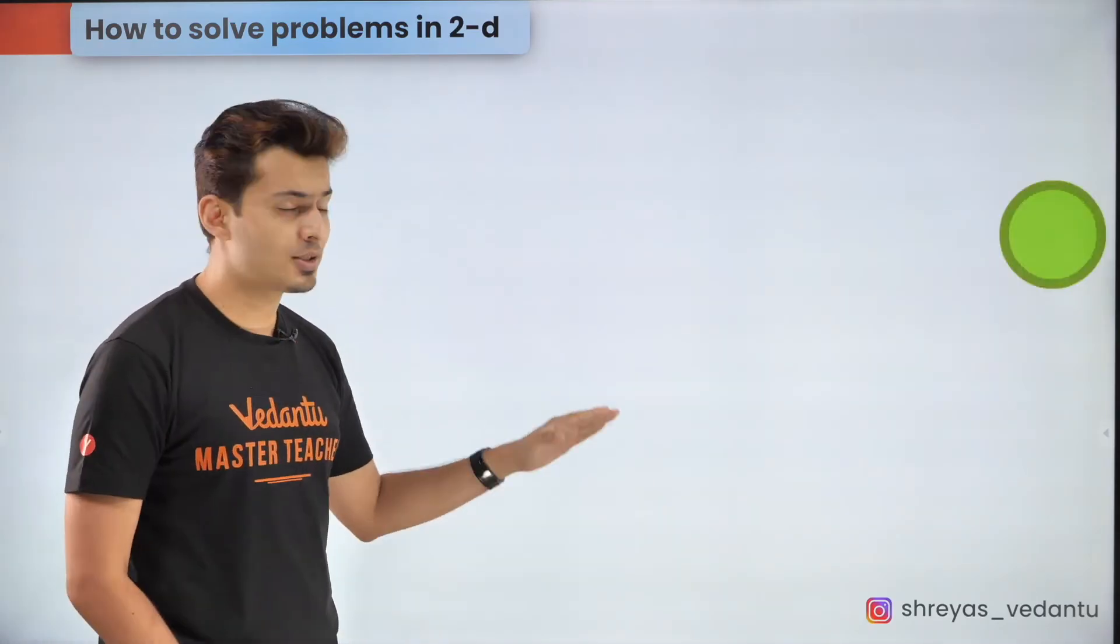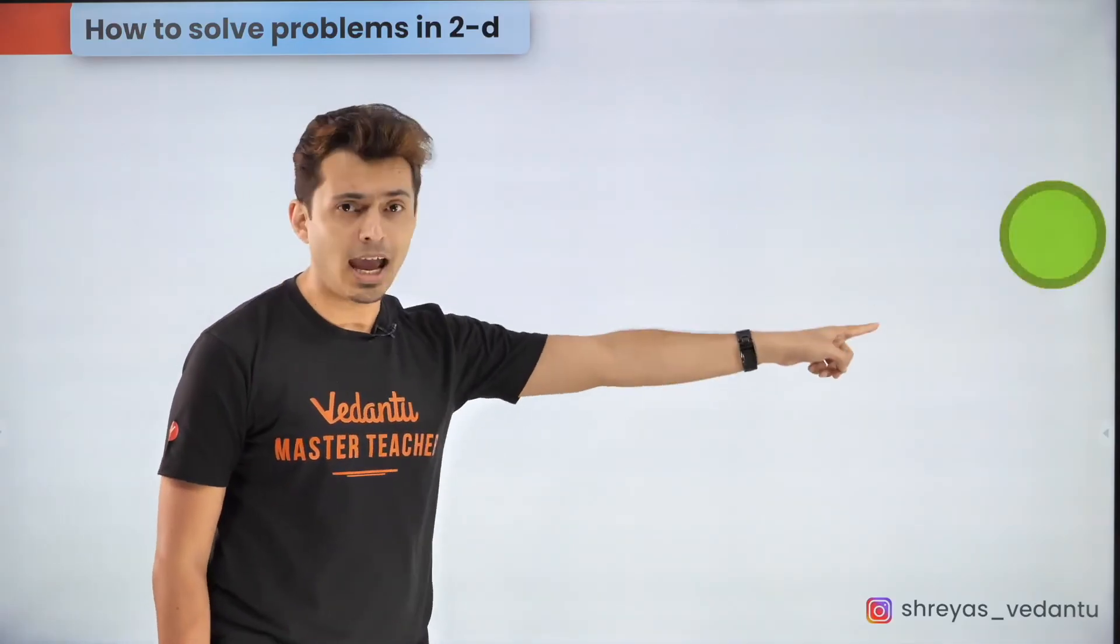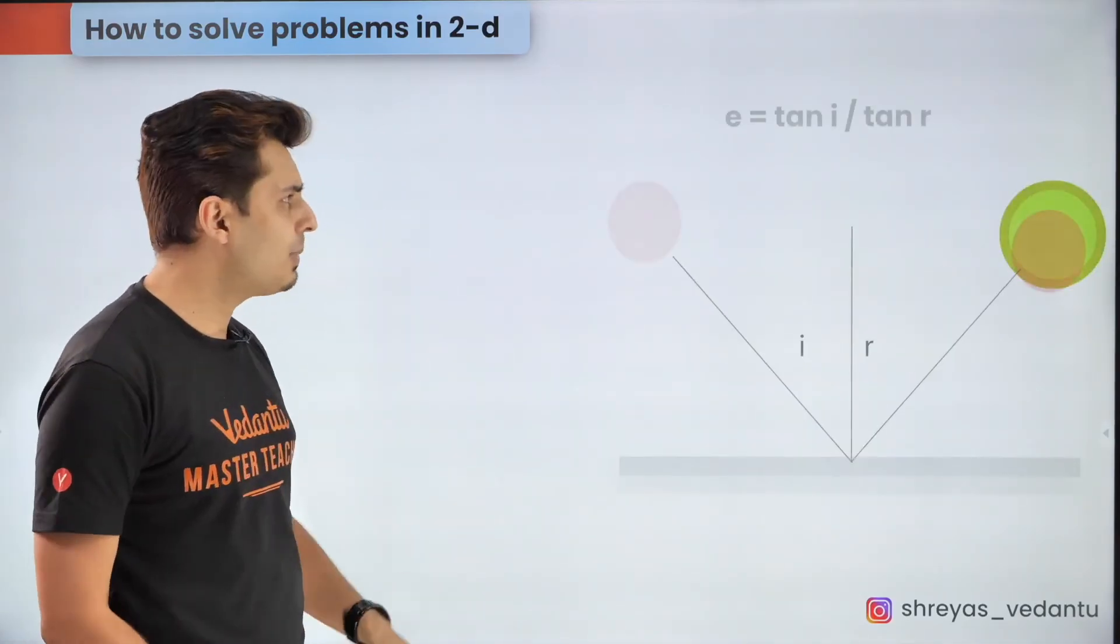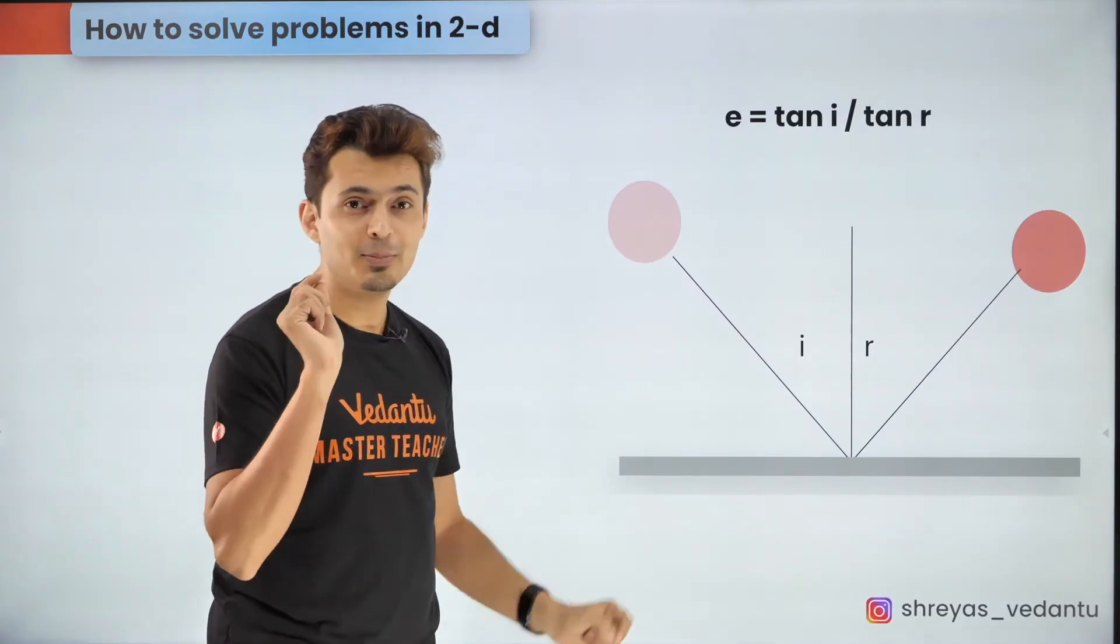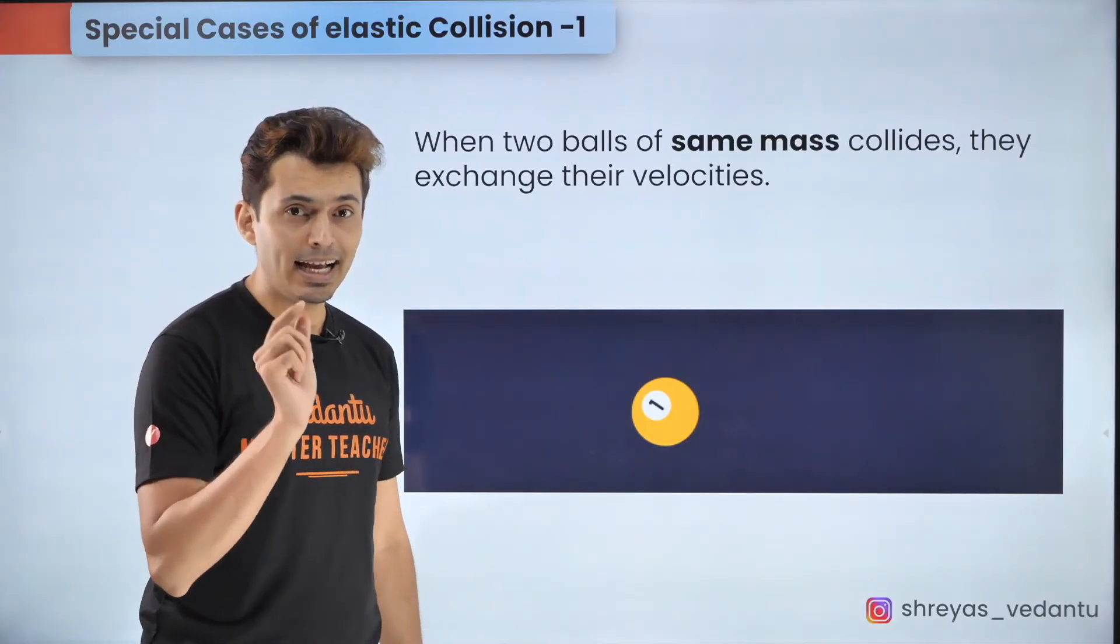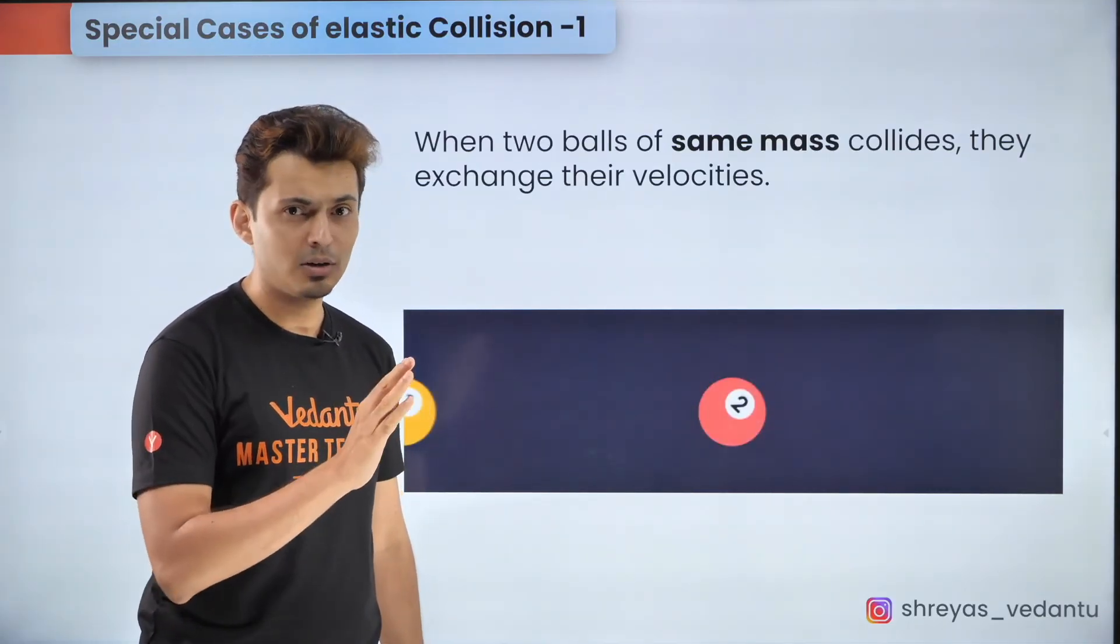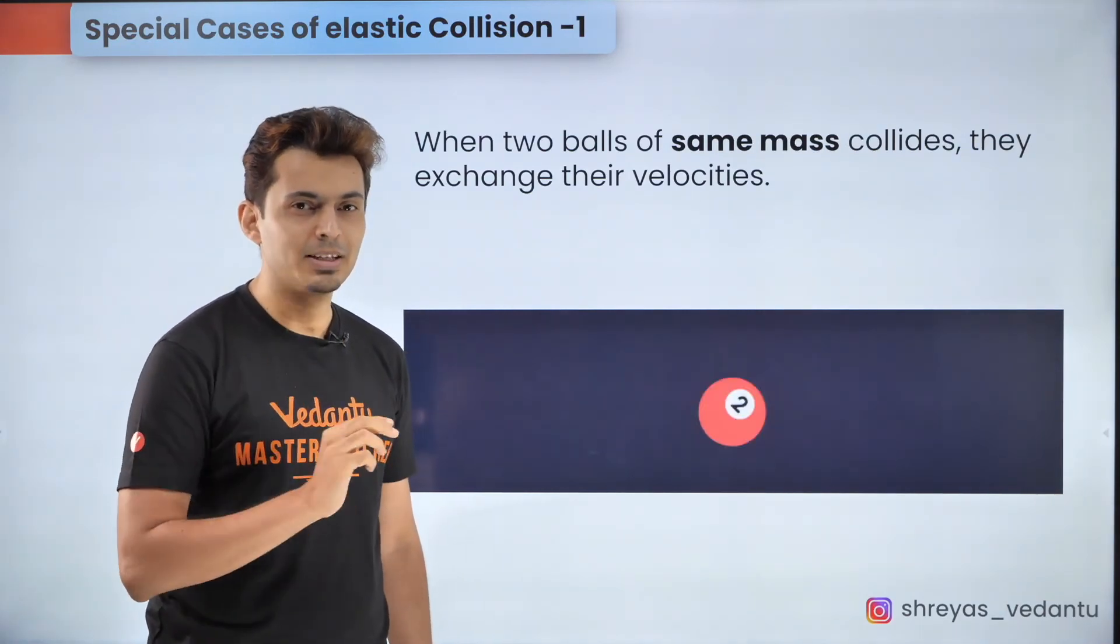You will see that the incident angle and the reflected angle are related by the coefficient of restitution is equal to tan of i divided by tan of r. There are some simple situations for elastic collision where energy is not lost which you must remember which can save you a lot of time in the examination. The first situation is where a ball collides with another identical ball in 1D and you will see after the collision their velocities get exchanged.